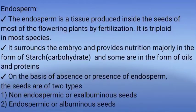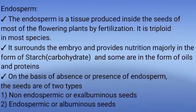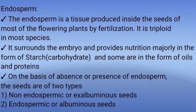The next important thing regarding seeds is the endosperm. The endosperm is a tissue produced inside the seeds of most flowering plants by fertilization. It is triploid in most species. Endosperm surrounds the embryo and provides nutrition, majorly in the form of starch, and sometimes in the form of oils and proteins.